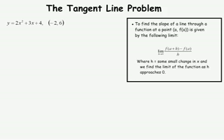Hello. This time, we're going to take a tangent line problem. We're going to find the line tangent to the curve y equals 2x squared plus 3x plus 4, at the point negative 2 comma 6.